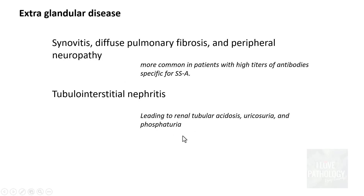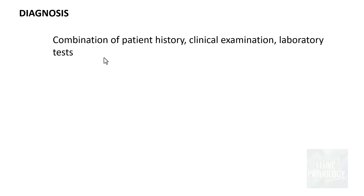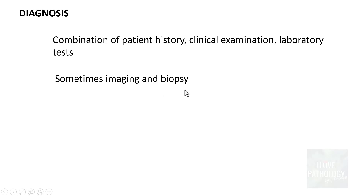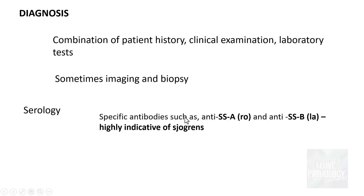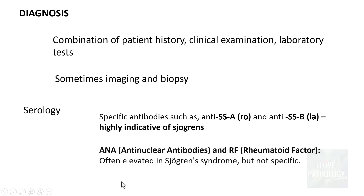Diagnosis of Sjogren's syndrome relies on a combination of patient history, clinical examination, and laboratory findings. Imaging is sometimes helpful, and biopsy may be suggested to find histological evidence. Serologically, specific antibodies such as anti-SSA/Ro and anti-SSB/La are highly indicative of Sjogren's syndrome. Other anti-nuclear antibodies and rheumatoid factor can also be elevated but are not specific, as they appear in other autoimmune diseases as well.